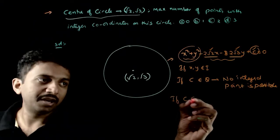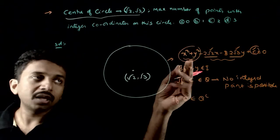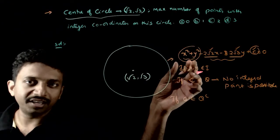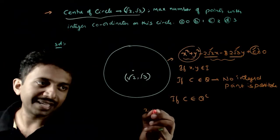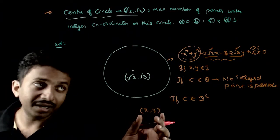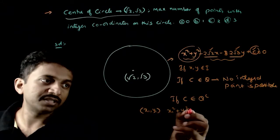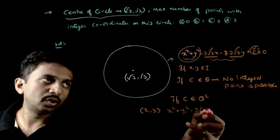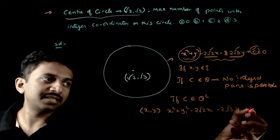Now if c belongs to irrational numbers, I can substitute one pair of integers. Let x₁, y₁ be an integral coordinate. So I will get x₁² + y₁² - 2√2x₁ - 2√3y₁ + c = 0.